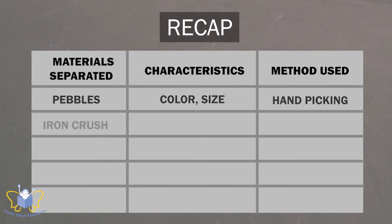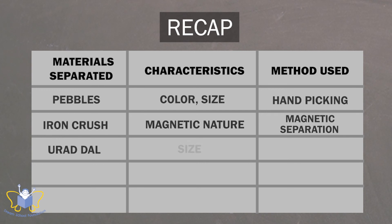Then we looked at iron crush. They appear different but are too small to pick, but are magnetic in nature. Hence, we used magnetic separation. Urad dal on the other hand are bigger than salt and white rangoli, but cannot be picked. Hence, using a sieve of proper size helps us to separate it easily and faster.